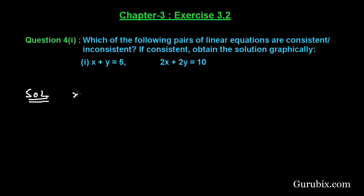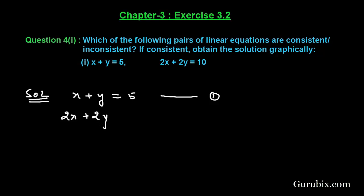First of all we shall collect the given equations. The first equation is x plus y equals to 5 — this is equation number 1. The second equation is 2x plus 2y equals to 10 — this is equation number 2.